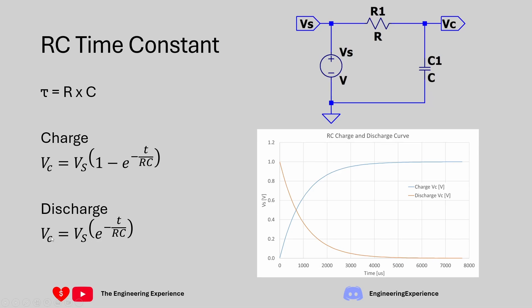The discharge curve is written as VC = VS × e^(−t/RC). Both equations are plotted on an Excel graph: the charge curve rises exponentially towards 1, while the discharge curve falls exponentially from 1 down to 0.